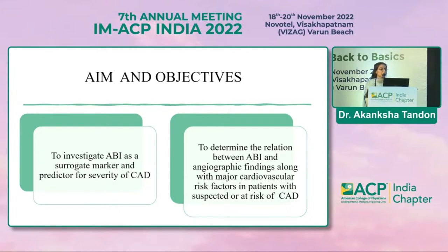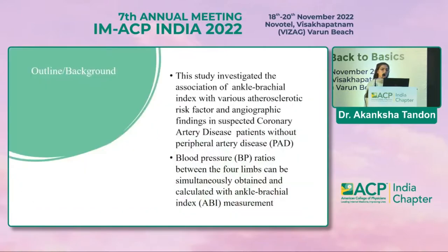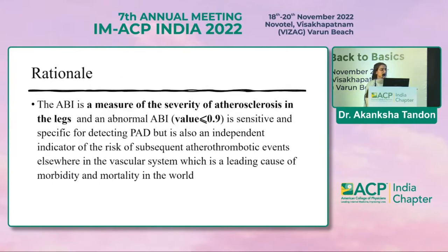The study also aimed to determine the relation between ABPI and angiographic findings along with major cardiovascular risk factors in patients with suspected or at risk of developing CAD. This study investigated the association of ankle brachial pressure index with various atherosclerotic risk factors and angiographic findings in suspected CAD patients without peripheral arterial disease. All patients with peripheral arterial disease were excluded, and blood pressure ratios between the four limbs can be simultaneously obtained and calculated with ABI measurement.